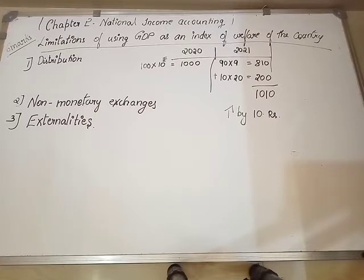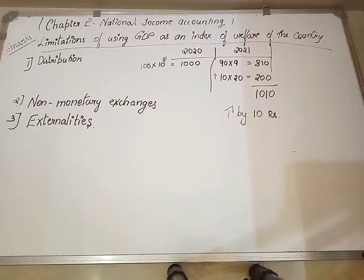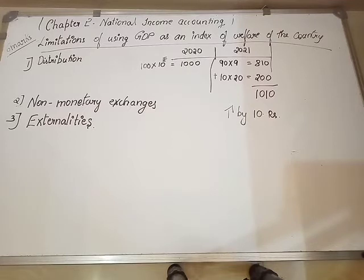So limitations are basically the drawbacks of using GDP as an index of welfare of the country. GDP is calculated based on goods and services produced within the domestic boundary, and how much is being produced to be supplied to the citizens of the country. This is going to be the last concept from this chapter, National Income Accounting, which can be asked for six marks. Moving to the concept.